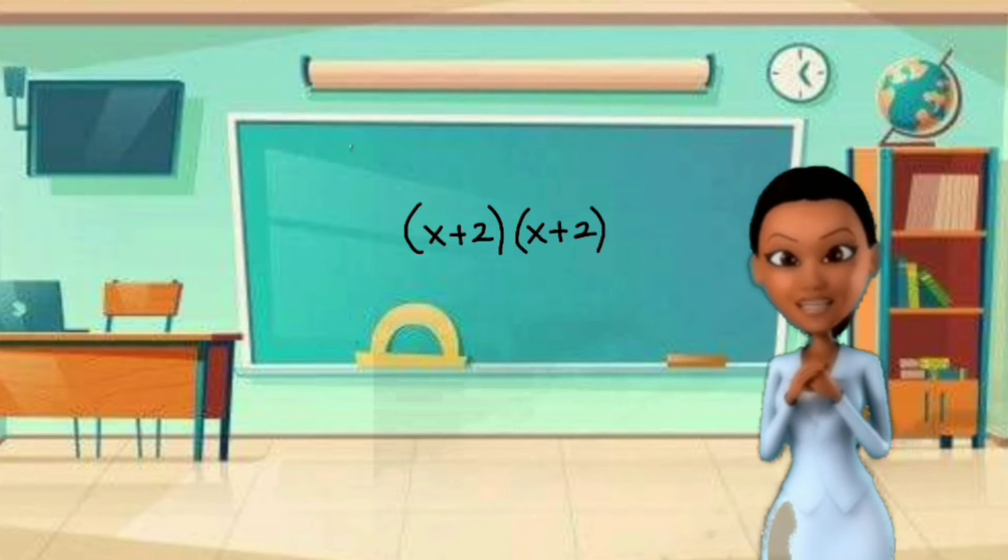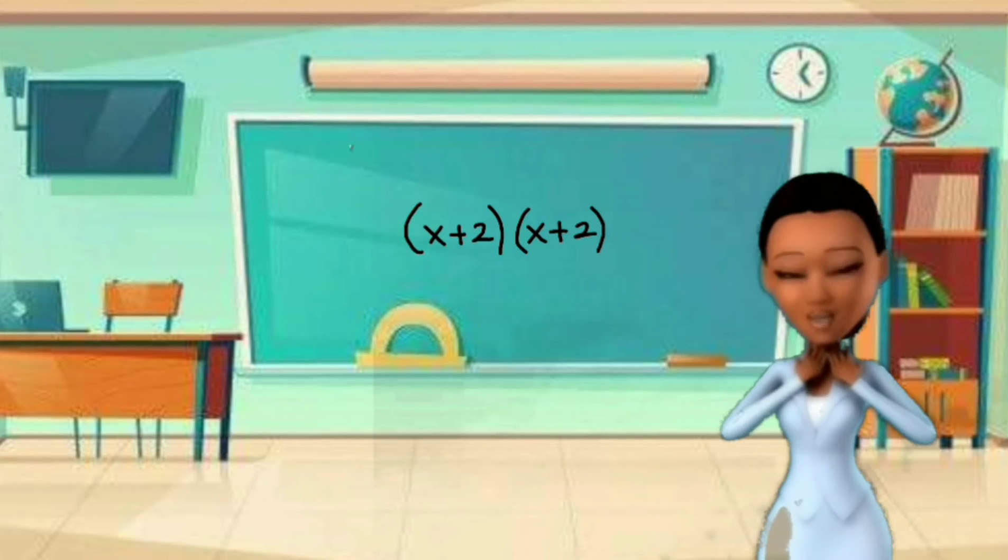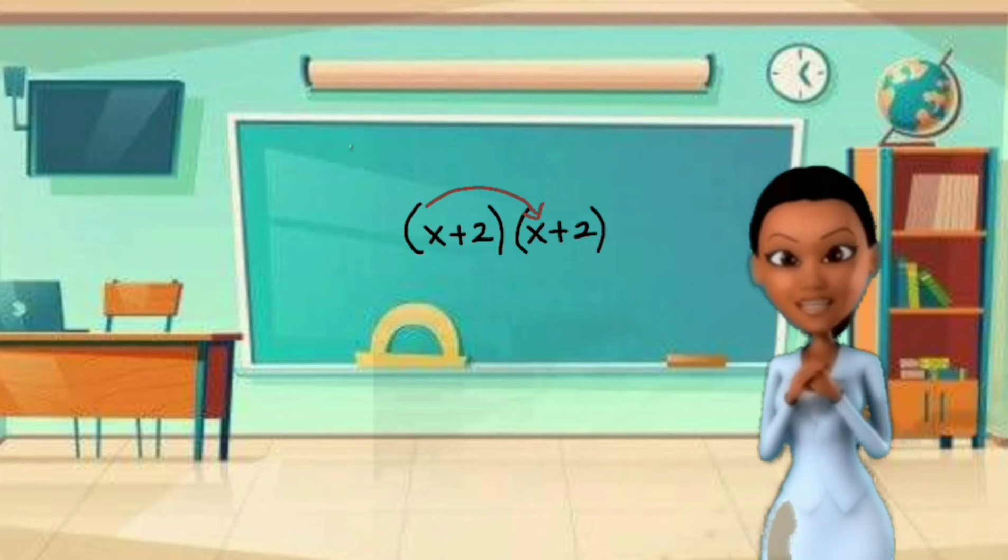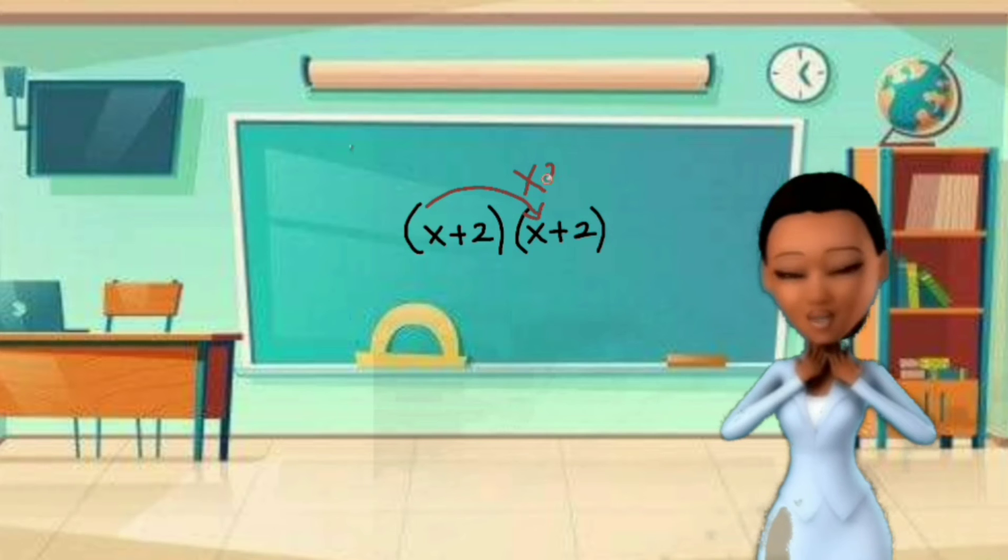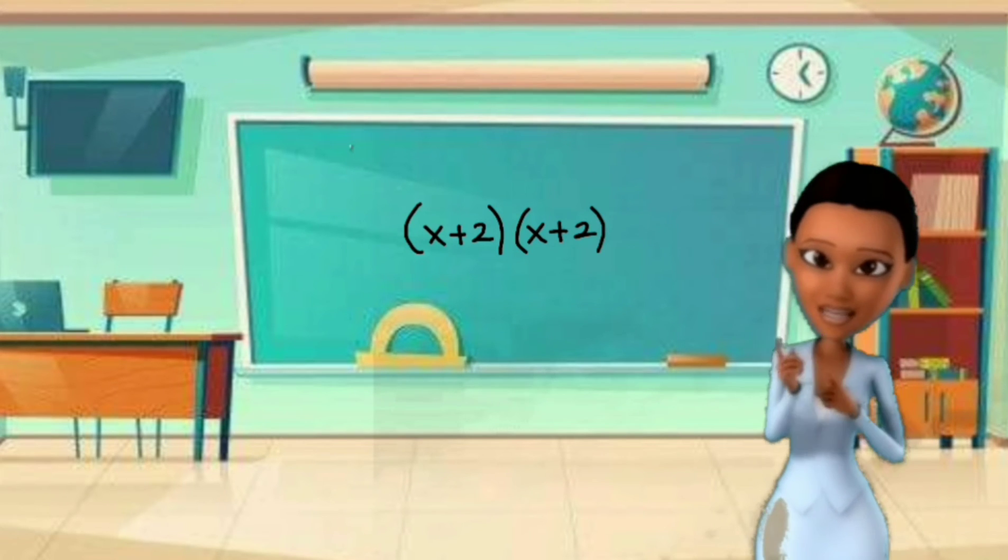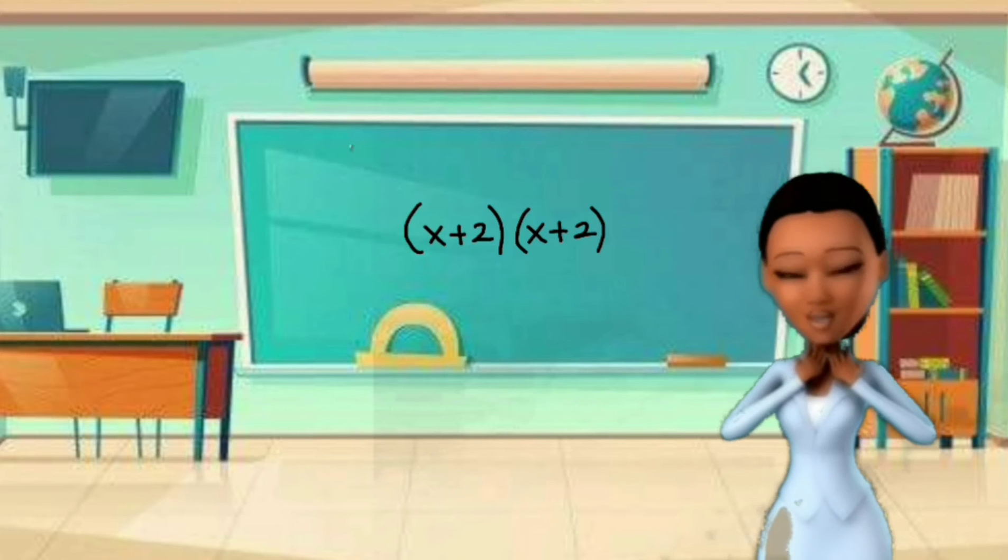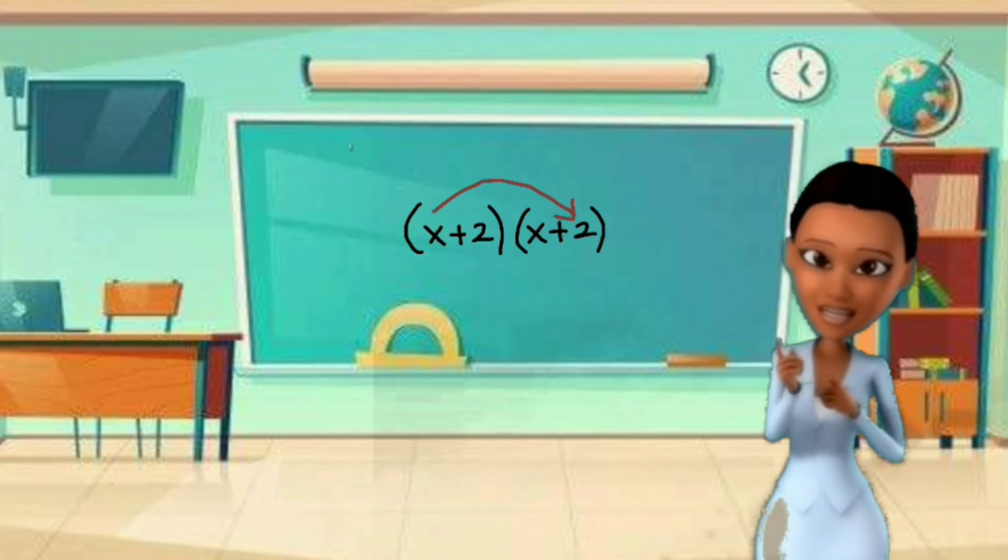In applying this FOIL method, we have to multiply the first term, and that is x times x equals x squared. Next, we multiply the outer terms, which is x times 2 equals 2x.